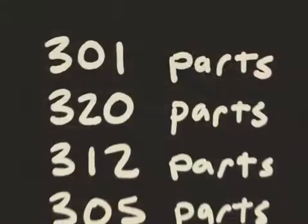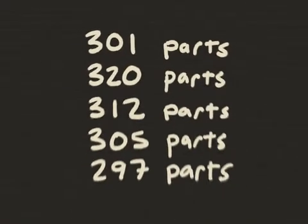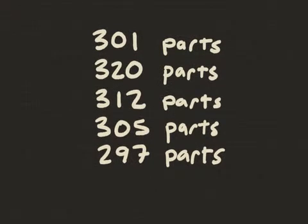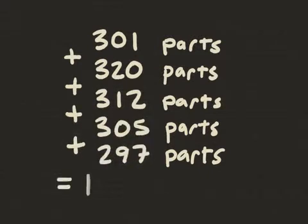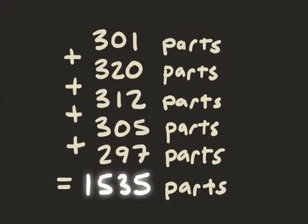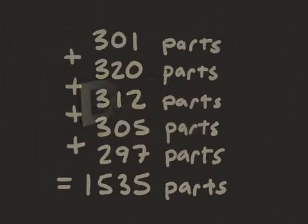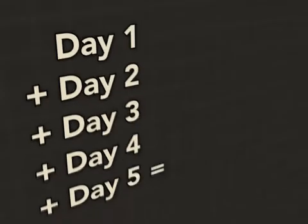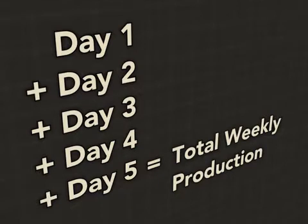A simple example of a formula is the list we calculated earlier to demonstrate addition. The following numbers were added to determine the total production for five days, which equal 1,535. The benefit to using such a formula is that you can calculate the total number of parts produced for any week of production.